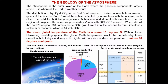The geology of the atmosphere. The atmosphere is the layer of the Earth where the gaseous components largely reside and is where all the Earth's weather occurs. The distribution of nitrogen, oxygen and carbon dioxide in the Earth's atmosphere, derived largely from volcanic gases at the time the Earth formed, has been affected by interactions with the oceans, each other, the solid Earth and living organisms, and has changed dramatically over time from an original atmosphere the same as present-day Venus with 98% carbon dioxide.